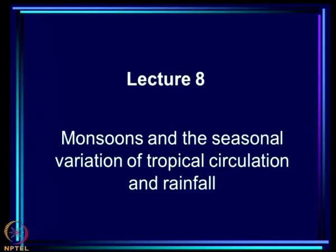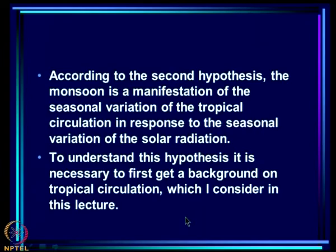In the last lecture we looked at the first hypothesis proposed for the basic system responsible for the monsoon, which said that the primary cause of the monsoon is the land-ocean contrast in surface temperatures. We showed that hypothesis is not tenable and is inconsistent with the observed variability in space and time of the monsoon. Today we will consider the second hypothesis, which looks at monsoon as a manifestation of seasonal variation of tropical circulation and rainfall.